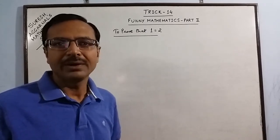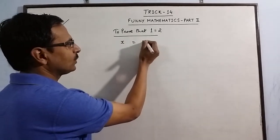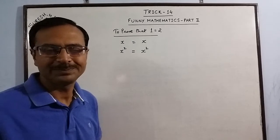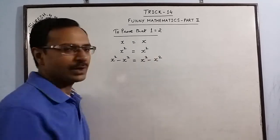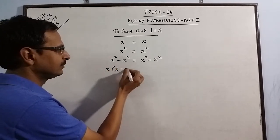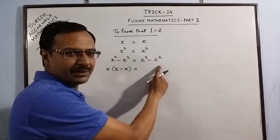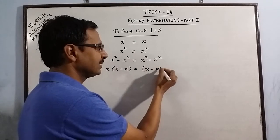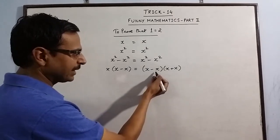I will adopt one method, demonstrate it stepwise, and you have to point out in your comments what is wrong in this procedure. Obviously x is equal to x. If we square both sides, x² = x². If I subtract x² from both sides, x² − x² = x² − x². Now I take x common, leaving one factor of (x − x). In the second part, I apply the identity a² − b² = (a − b)(a + b).